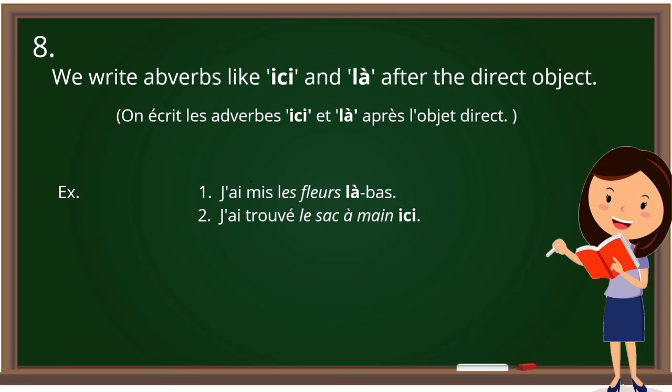Rule number eight is also related to placement. We write adverbs like 'ici' and 'là' after the direct object. For example: 'J'ai mis les fleurs là-bas' — here the direct object is 'les fleurs.' In the next sentence: 'J'ai trouvé le sac à main ici' — 'le sac à main' is the direct object, so we use 'ici' just after it.